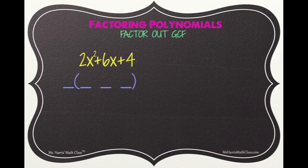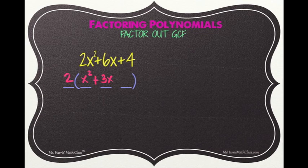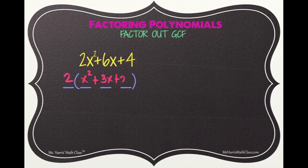Let's look at the trinomial 2x squared plus 6x plus 4. There is a common factor, so we'll begin by drawing the skeleton. 2 is the greatest common factor, written on the outside. 2 times x squared is 2x squared, 2 times positive 3x is positive 6x, and 2 times positive 2 is positive 4. You're only done factoring when all of the factors are completely factored.